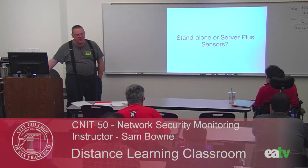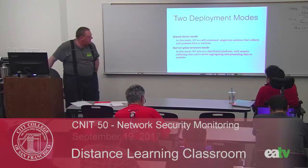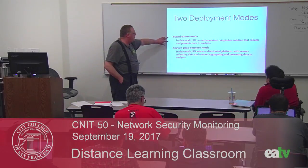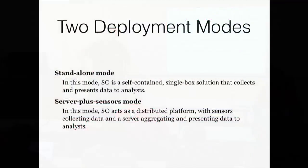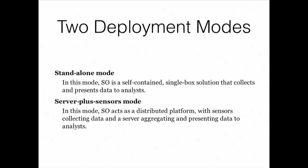One issue here is you can have a standalone deployment or a separate server and sensors. Standalone mode is what we did here just for ease of learning how to use the tools — you have one network interface on your Security Onion box for both management and capture. You're mainly going to use that to analyze saved captures. Server plus sensors is what you do in a real network — catching traffic with, say, three sensors out there that really ought to be hardware taps, with a separate box as the server.